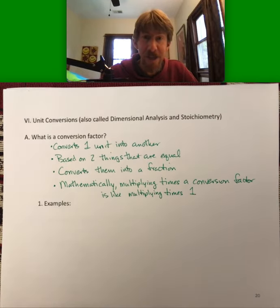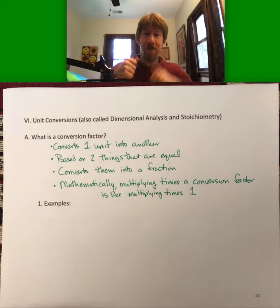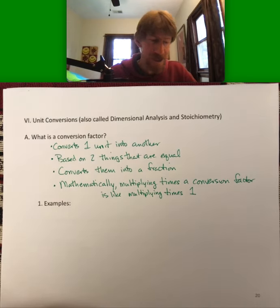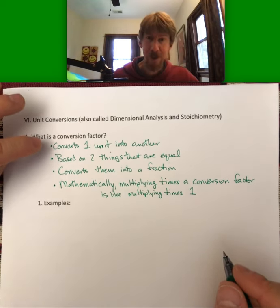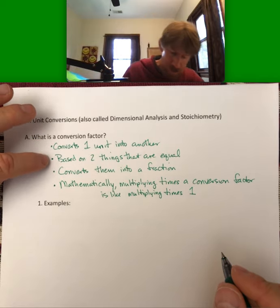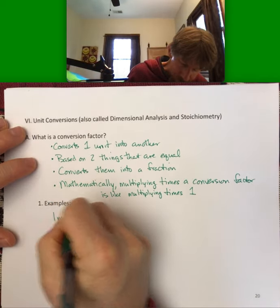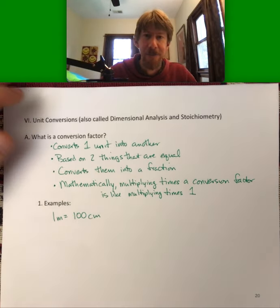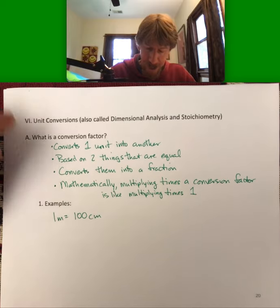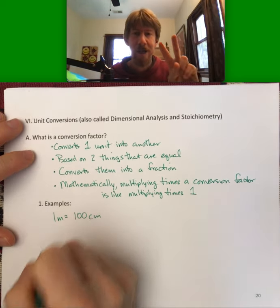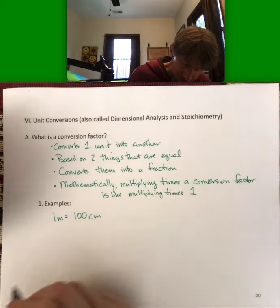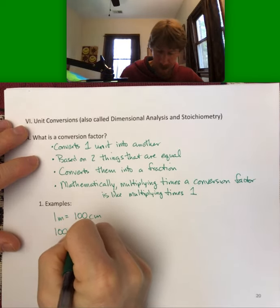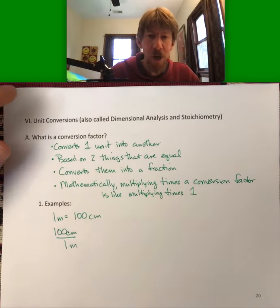Multiplying by one still makes it a true statement — two thumbs up for math. For an example of converting one unit into another, based on two things that are equal, we might say one meter equals 100 centimeters. We can convert that into two possible fractions, giving us two possible conversion factors: 100 centimeters over one meter...